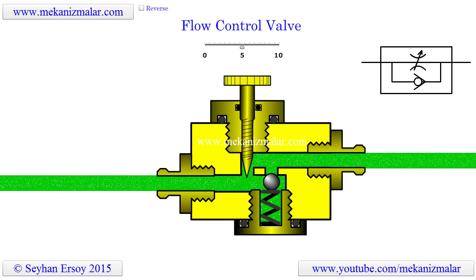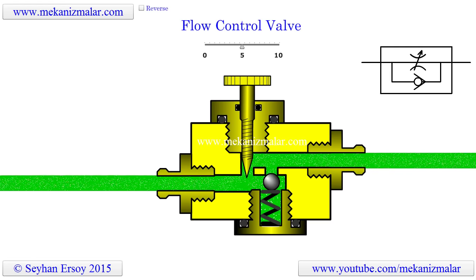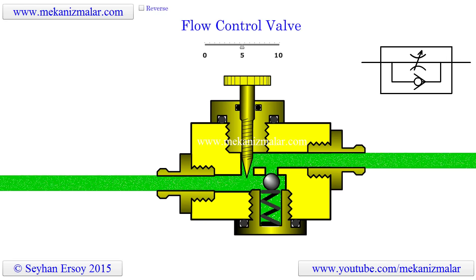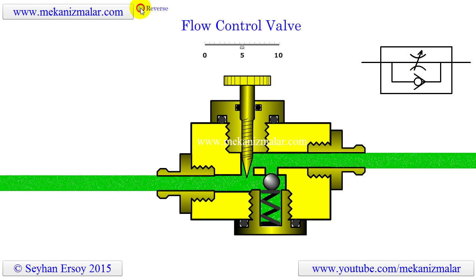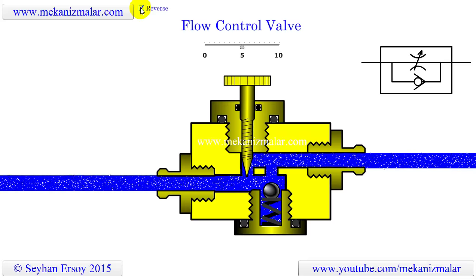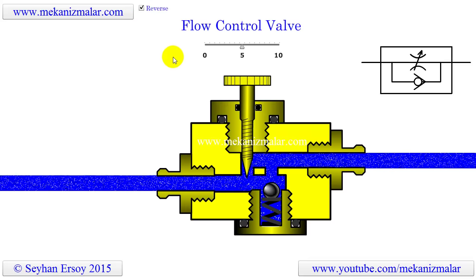You can solve this problem by adding a quick exhaust valve at the inlet port of your cylinder. I will do an animation of this in the near future. The other solution is to put a check valve in tandem with a needle valve such that the check valve will be open in the return stroke of the piston. The uncompensated flow control valve we are going to describe here is actually a repackaging of the needle valve and check valve combination in a single valve.